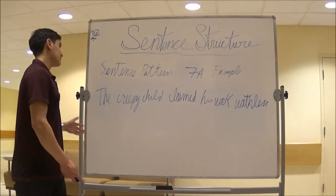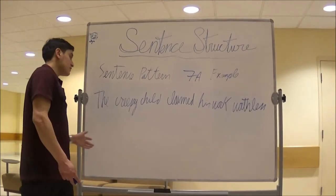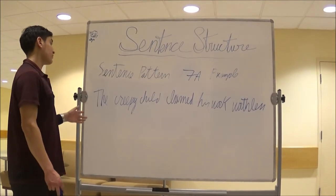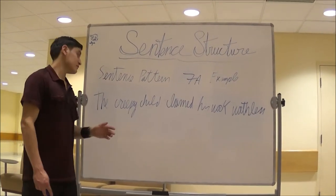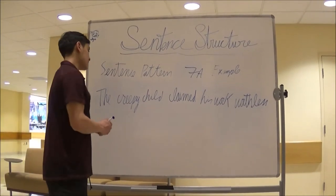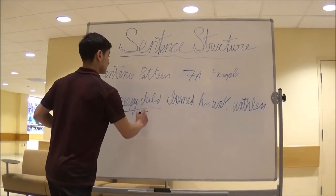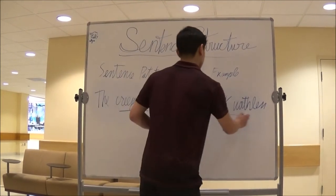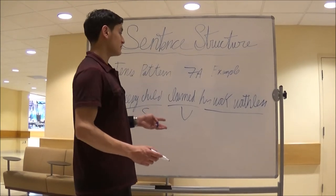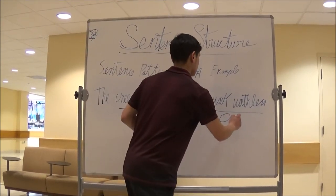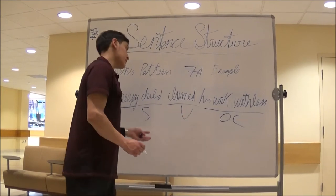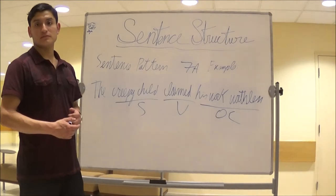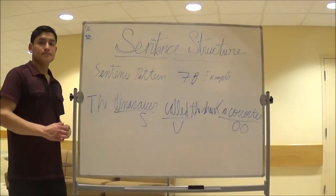Sentence pattern 7a. The example is: the creepy child claimed his work worthless. This is a transitive verb with a direct object and an object complement. The creepy child is the subject, 'claimed' is the verb, his work is the direct object, and worthless is the object complement, which also acts as a direct object.